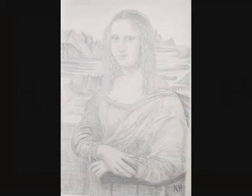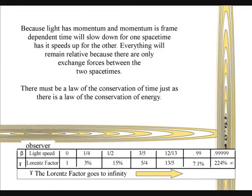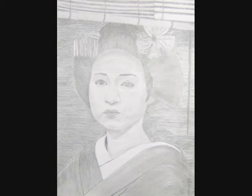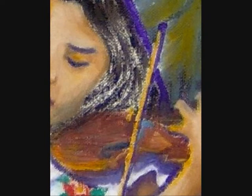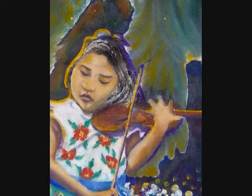I believe there is a law of the conservation of time, just as there is a law of the conservation of energy. Because of this law, time slows for one at the same rate that it speeds up for the other. Time will speed up for the twin left at home, because he is in the same space-time, or reference frame, created by the momentum of the rocket. For the astronaut twin sat in the cockpit of the rocket, there is no change of momentum, because he has a reference frame, or space-time, attached to the object's centre of mass. Because this mass is increasing as he accelerates towards the speed of light, his time is slowing down.